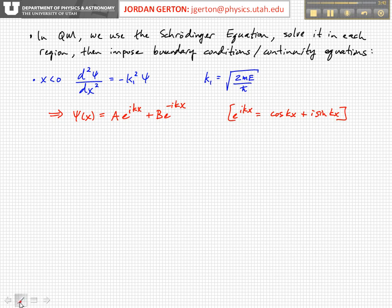For x greater than 0, we get d squared psi by dx squared equals minus k2 squared psi.